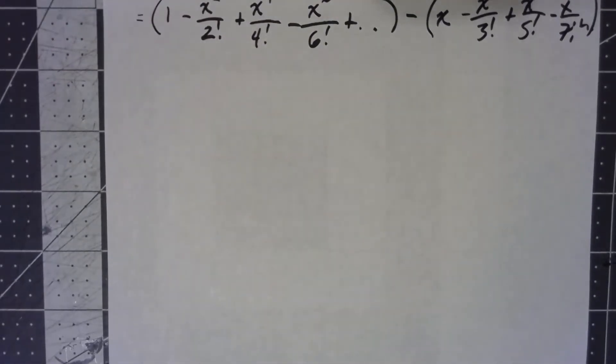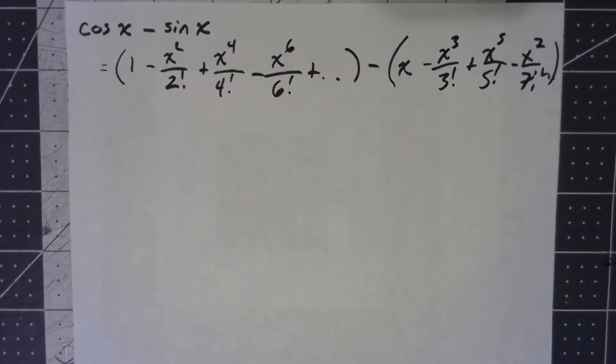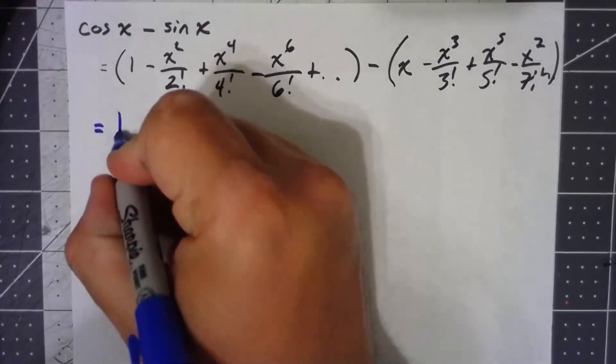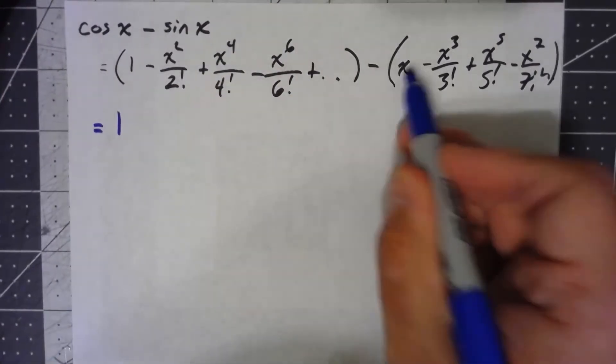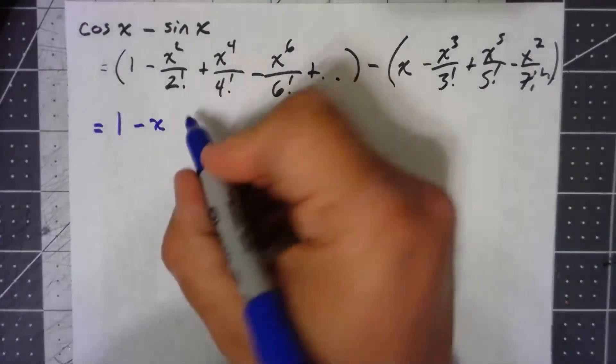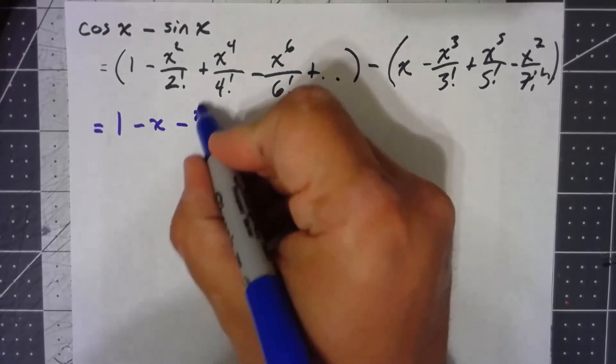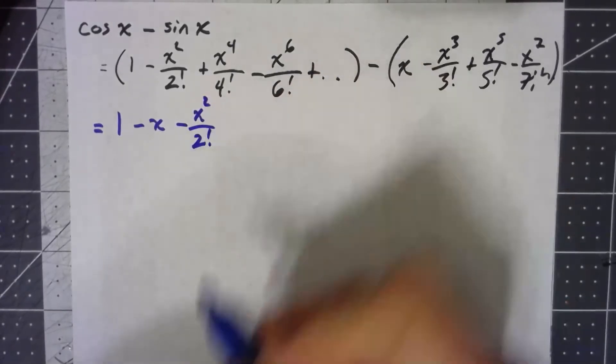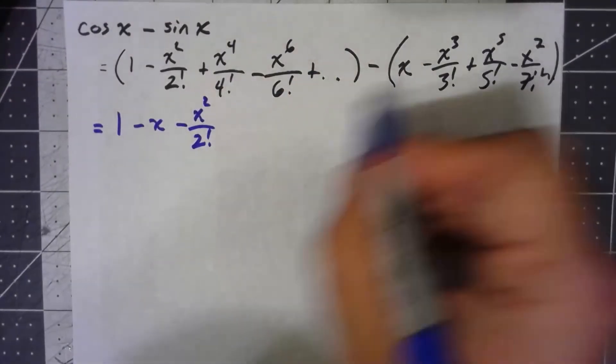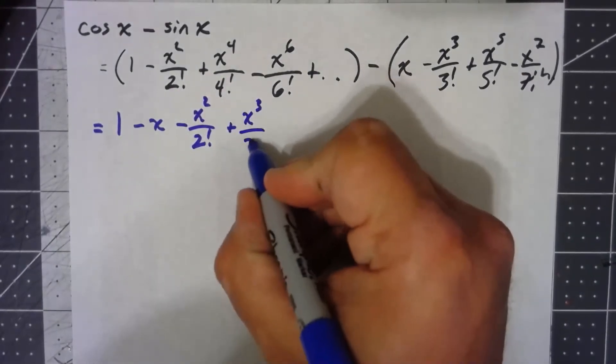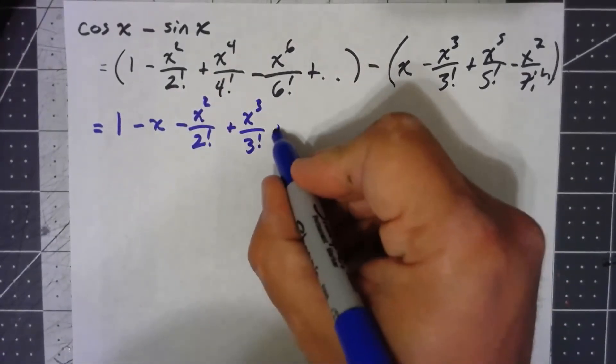Well, let's take this and let's interleave things so that we've got them in ascending order of the powers. So, I've got a 1, I'm going to have a minus an x, a minus an x squared over 2 factorial minus a negative is a plus x cubed over 3 factorial plus an x to the 4th over 4 factorial